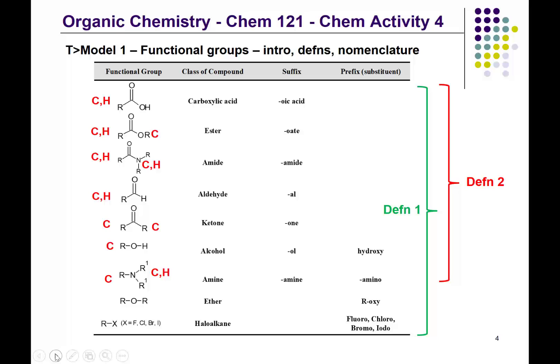The last two functional groups are the ether and the haloalkane. In the ether, both R groups have to be carbons — if one were a hydrogen, we'd have the alcohol functional group. For the haloalkane, the R has to be a carbon; otherwise we would have hydrofluoric acid or hydrogen fluoride, or hydrochloric acid or hydrogen chloride. So that R group has to be a carbon.